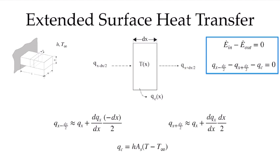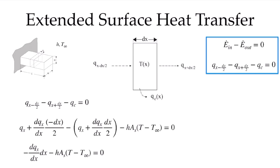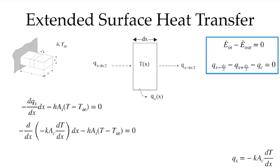The convection term from the surface, because of our one-dimensional assumption, means we can describe it with the same temperature at the x location, and it's given by Newton's law of cooling: h times the surface area times T minus T_infinity. Putting that all together, we get this expression, which greatly simplifies. Subtracting the out from the in, the Q_x terms cancel out, and we have minus dx over 2 and another minus dx over 2 multiplying the derivative of the heat rate. We can combine those to get minus the derivative of the heat rate times dx, minus the convection term. Substituting Fourier's law into our equation, we get this expression.